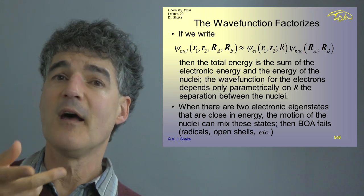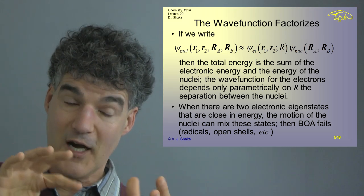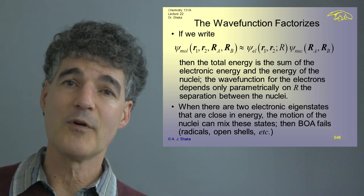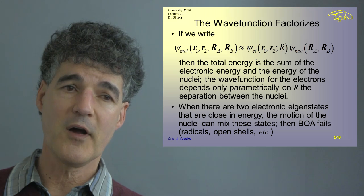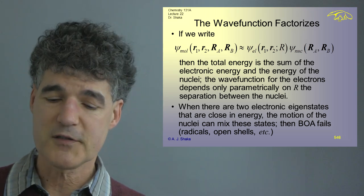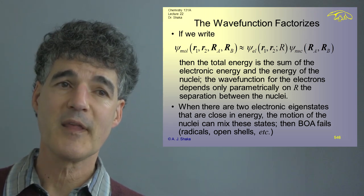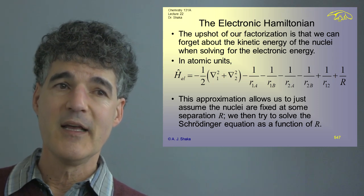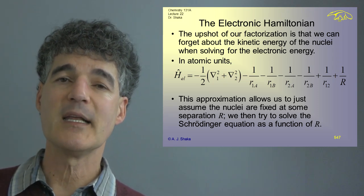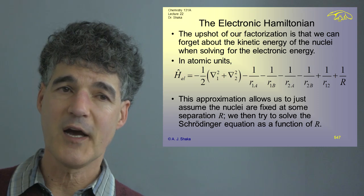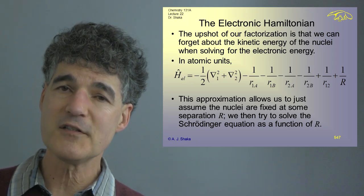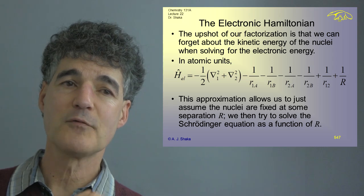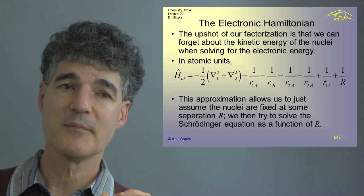When electronic states are coupled — the motions are coupled, the whole thing's wobbling around — then we're in trouble and we can't use the Born-Oppenheimer approximation; in that case it fails. But the upshot of our factorization is we can forget completely about the kinetic energy of the nuclei. We just clamp them down, freeze them, and solve for the electronic energy. That's a really important simplification.